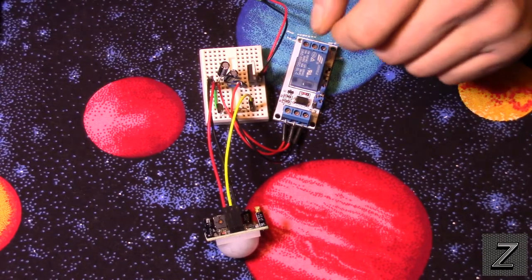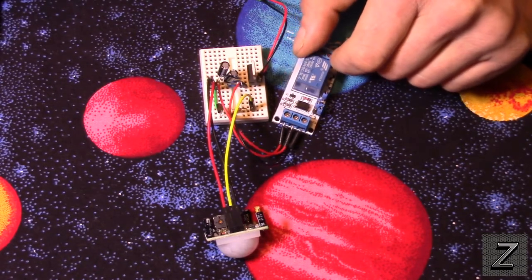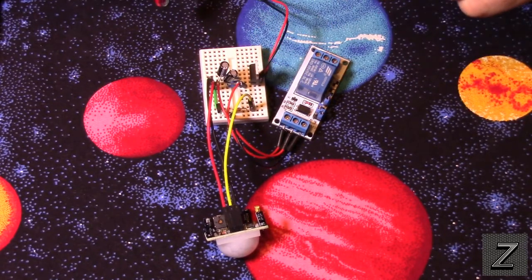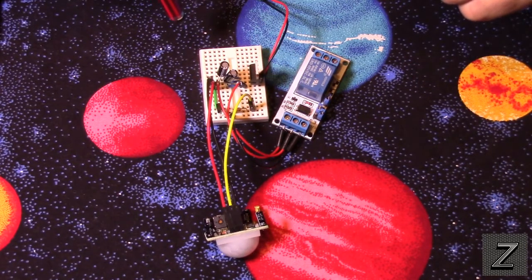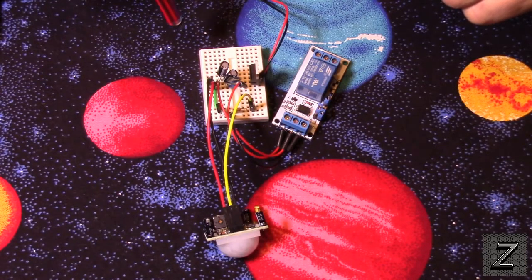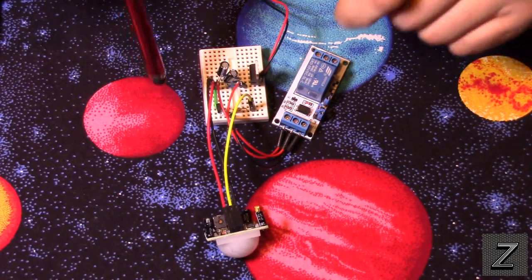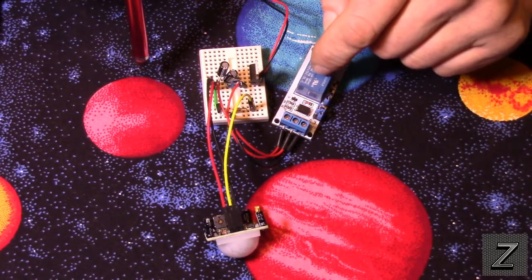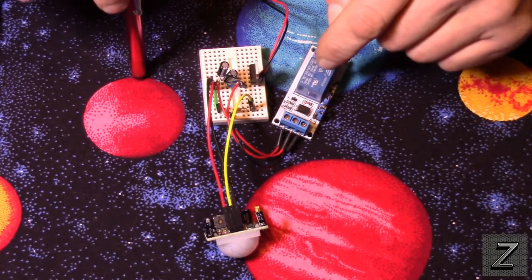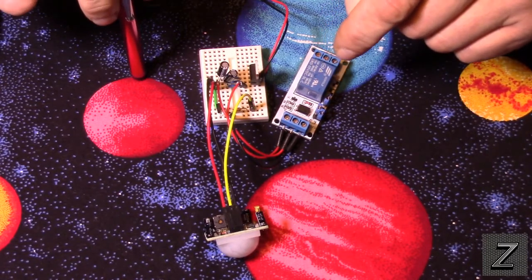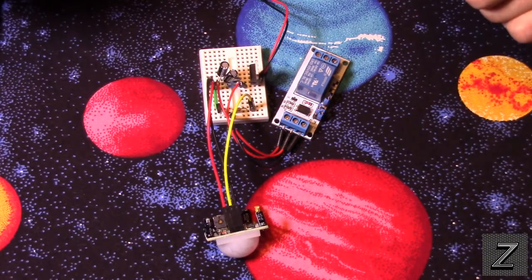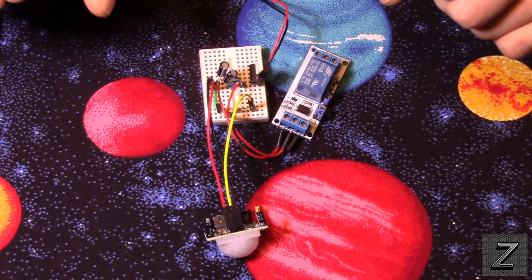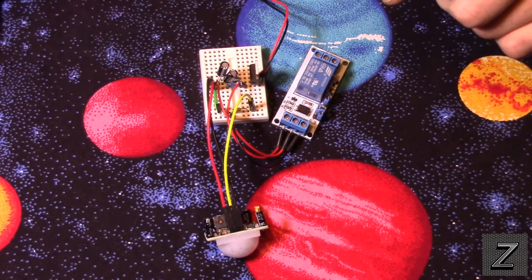Now, this project is actually pretty simple to hook up. It doesn't take very many components, and there are lots of applications for this, lots of different things you can control. Now, before we get started, a little disclaimer. If you're going to be using this relay to control something with higher voltage, like 110 or 220, build this project at your own risk. We will not be responsible if you electrocute yourself or burn your house down or blow something up.